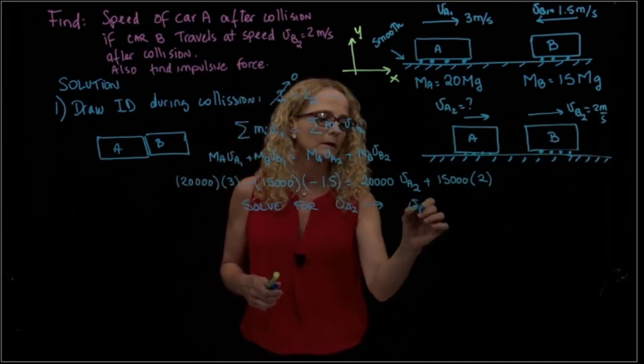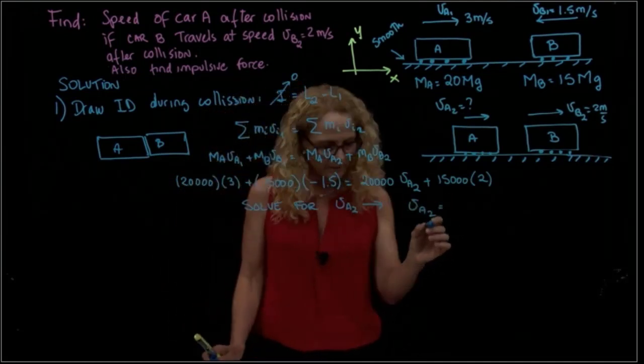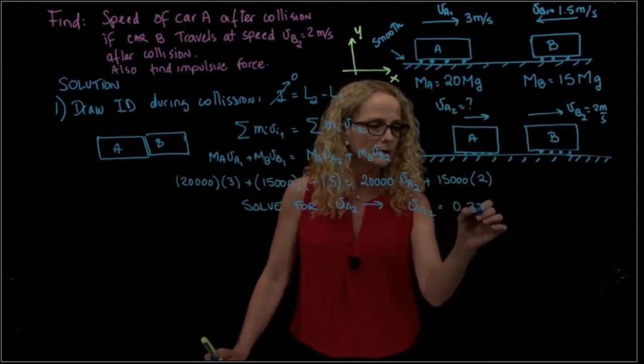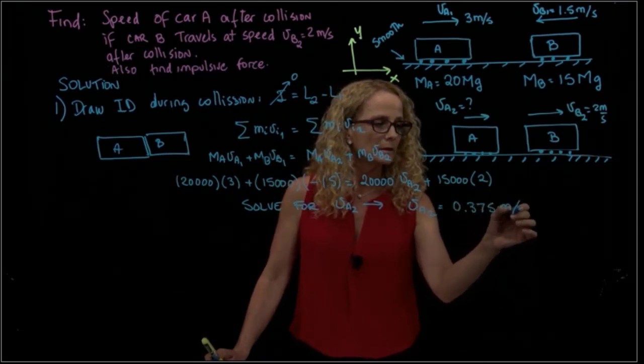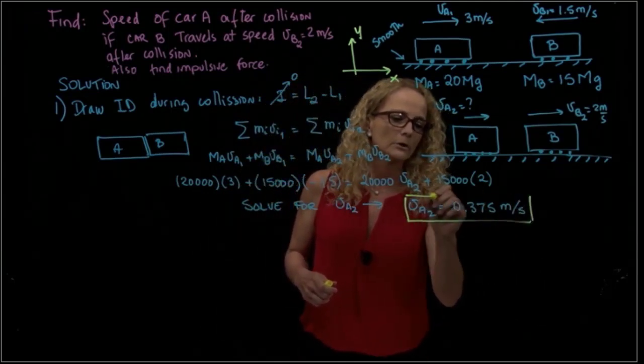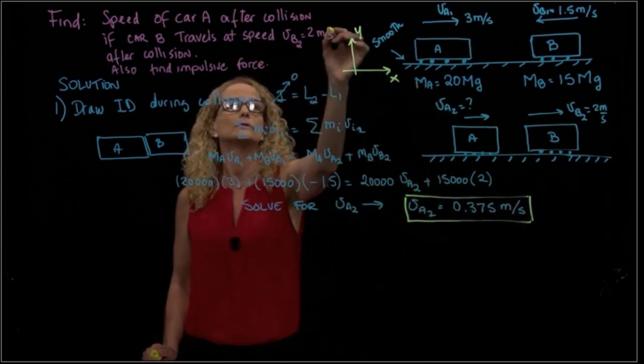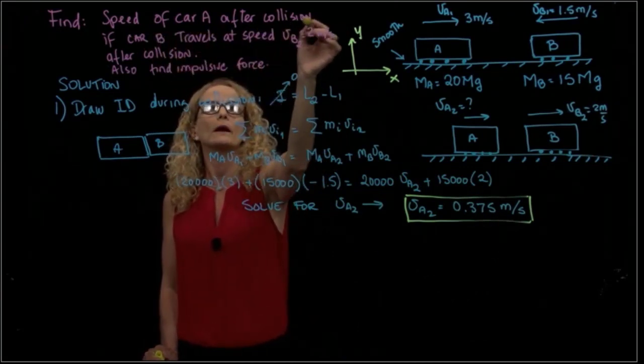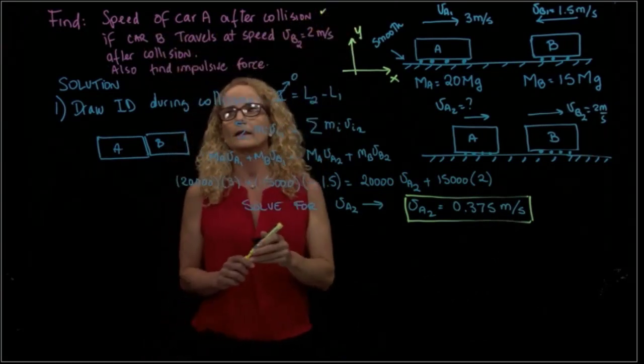That gives me the result of 0.375 meters per second positive. So that was the first thing we were asked to find - the speed of car A after collision.